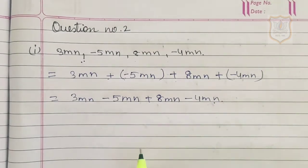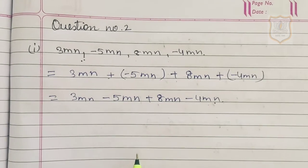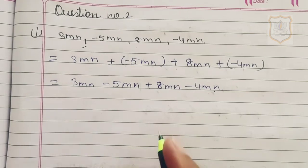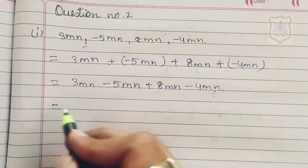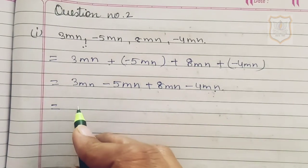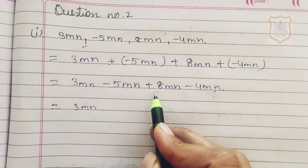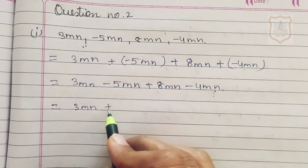Since all terms are like terms, we will arrange them together. First we write 3mn, then plus 8mn — grouping the positive like terms together — and then the negative like terms: minus 5mn and minus 4mn.